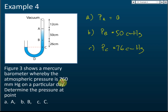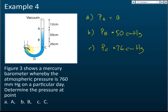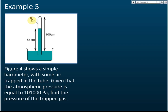Pressure at C is 76 cm mercury. You can tell from the question because they say the atmospheric pressure is 760 mm mercury. Point C is at the same level as the atmospheric pressure, so the pressure is the same — 760 mm or 76 cm mercury.